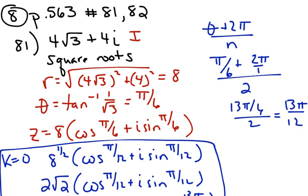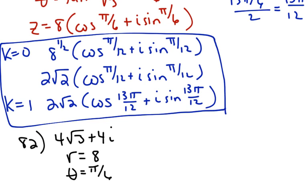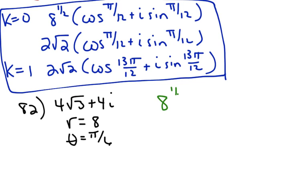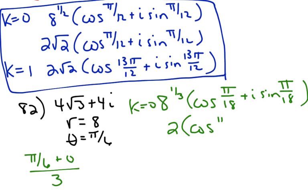For number 82, most of the setup is the same, except we're finding cube roots, where r is 8 and theta is pi/6. Since we're dividing by 3, for k=0 we get pi/6 plus 0, divided by 3, which gives cosine(pi/18) plus i sine(pi/18). Since the cube root of 8 is 2, the first cube root is 2 cosine(pi/18) plus i sine(pi/18). Not a special angle.